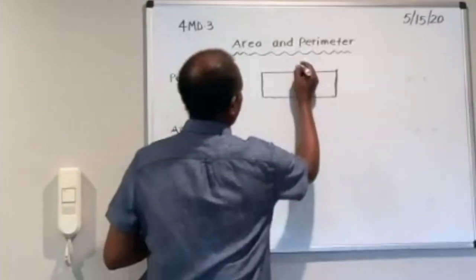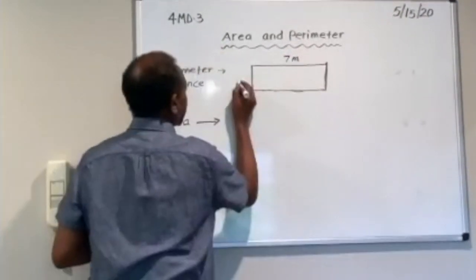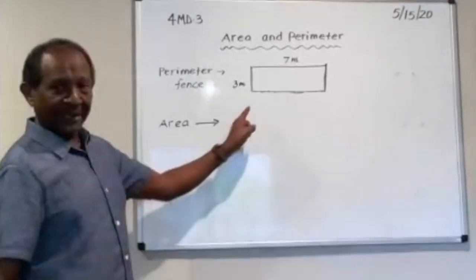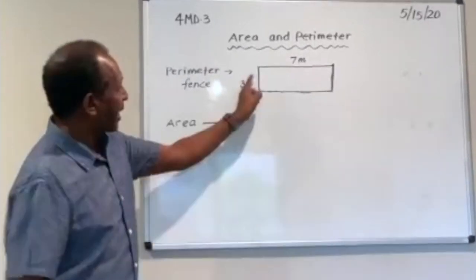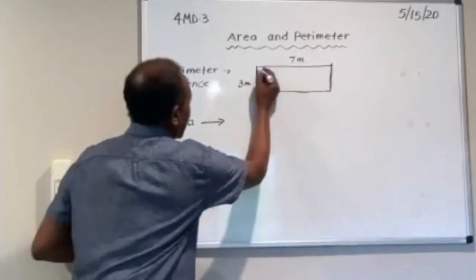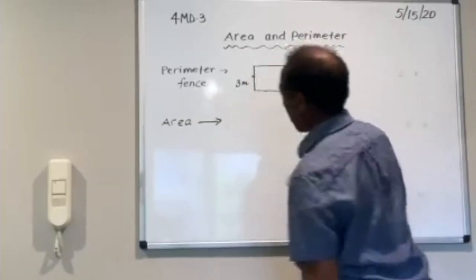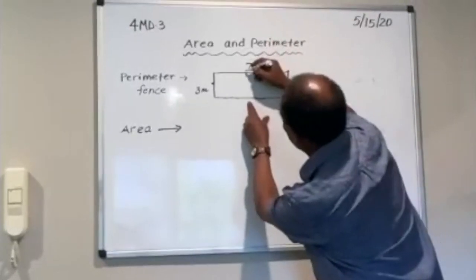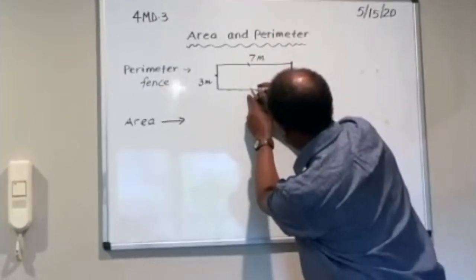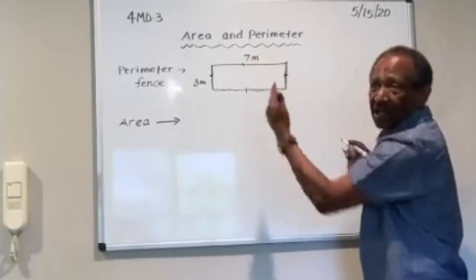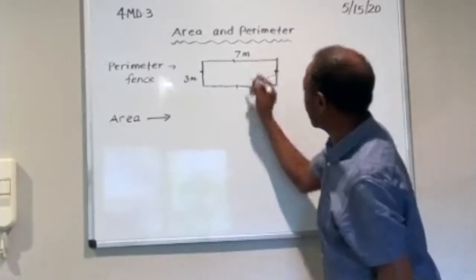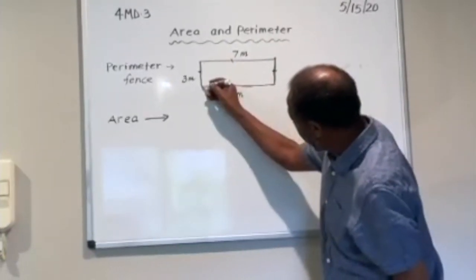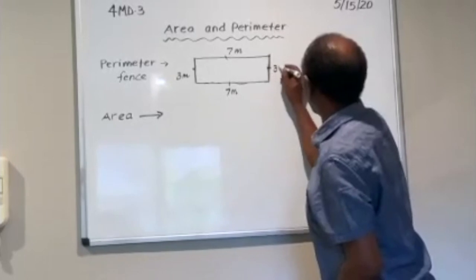For example, if we say this side is seven meters and this side is three meters — we know a rectangle has two pairs of parallel lines. So this side and the opposite side are parallel, they are equal, they are congruent in size. So if I know this is seven meters, this is also seven meters. If I know this is three meters, this is also three meters.